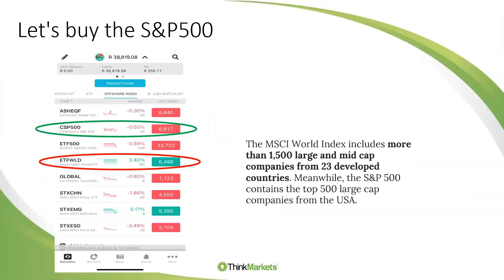So how do we buy the S&P 500? You've got full access from ThinkMarkets. You can buy into one of my favourites, the CoreShares S&P 500. I like it because it's got a very low TER and a very good weighting in it. One thing to always remember is that you have an S&P 500 and then you've got the MSCI. The MSCI World Index includes more than 1,500 large and mid-cap companies from 23 developed countries, meanwhile the S&P 500 contains the top 500 large-cap companies from the USA. There is a difference between an MSCI and obviously an S&P. For me, the S&P has been one of the better ones — the US has been doing phenomenally well and my S&P 500 has been growing very, very nicely every single year.